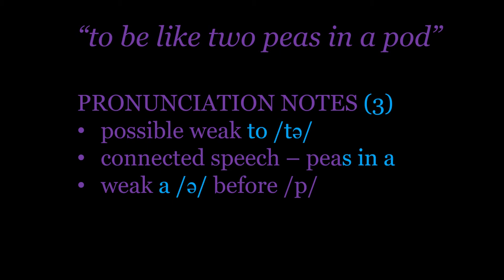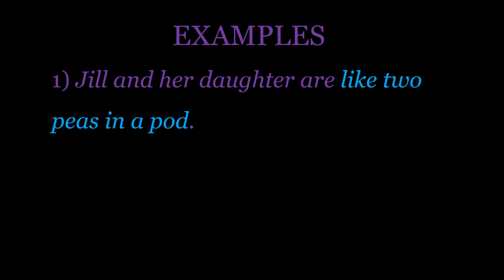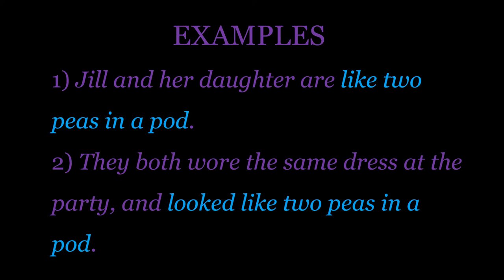So let's have a look at a couple of examples. 'Jill and her daughter are like two peas in a pod.' 'They both wore the same dress at the party and looked like two peas in a pod.' Generally, I'd say people use this as a neutral or possibly positive idiom. I don't get any negative feeling from this one personally — for me, it's kind of a cute idiom. It's nice.